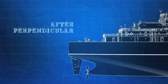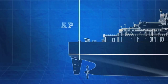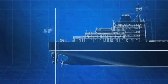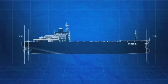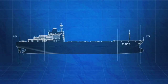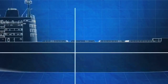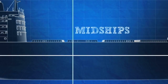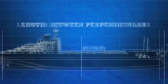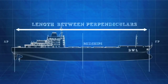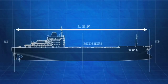The after perpendicular, or AP, is a vertical line drawn at the intersection of the design waterline and the aftmost point of a ship's hull. For most commercial vessels, this is generally where the rudder post is located. Midships is the horizontal point halfway between the forward and aft perpendiculars, and the length between perpendiculars, or LBP, is the total horizontal distance between the forward and aft perpendiculars.